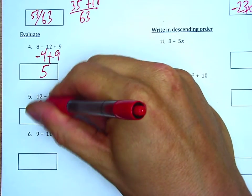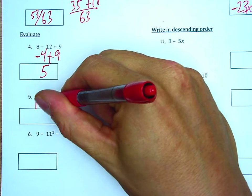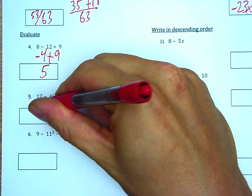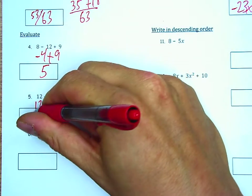Here I'm going to multiply negative 4 times by 7. I'm going to get 28. It's going to be positive 28. It's going to be 12 plus 28, which will be 40.